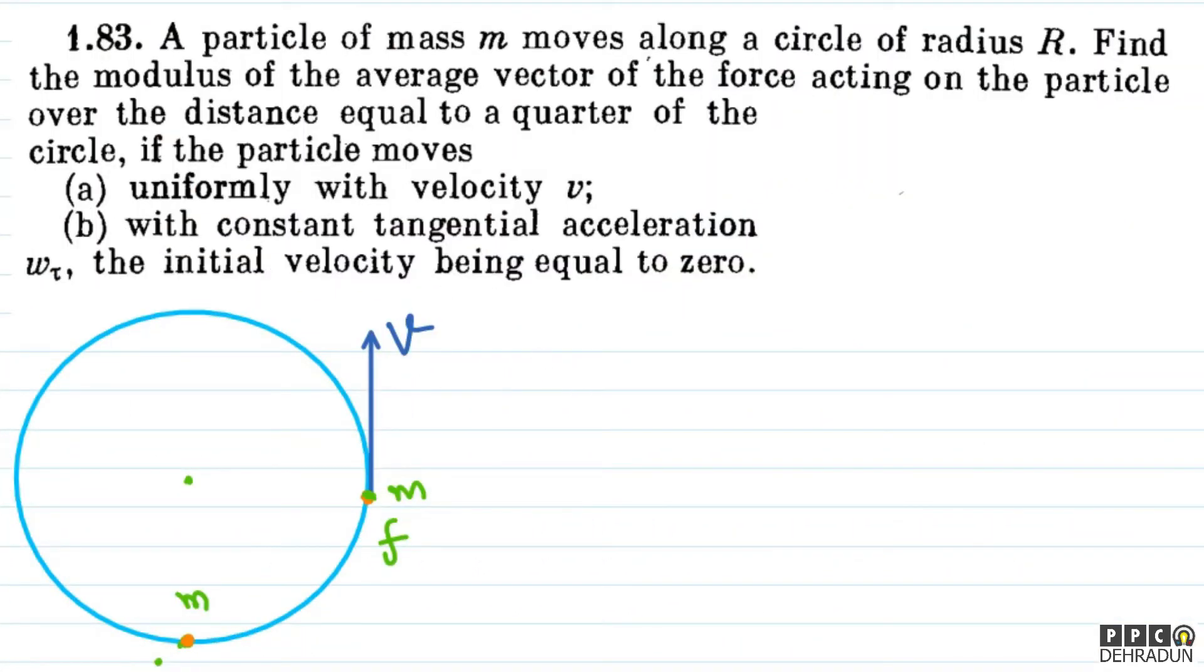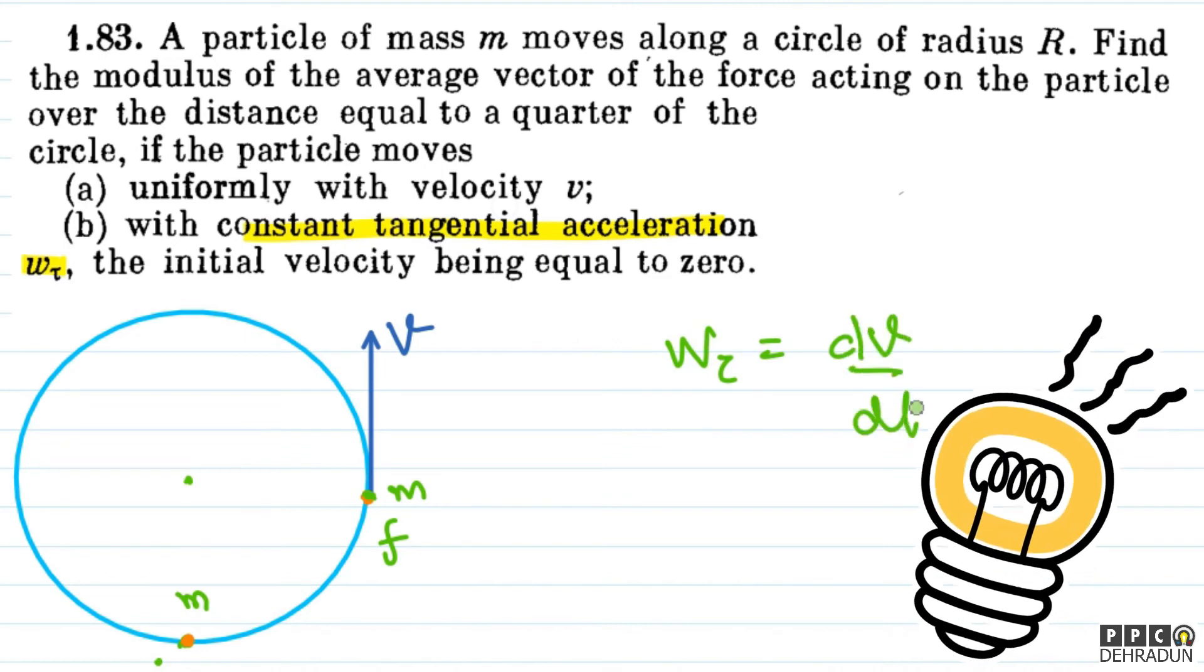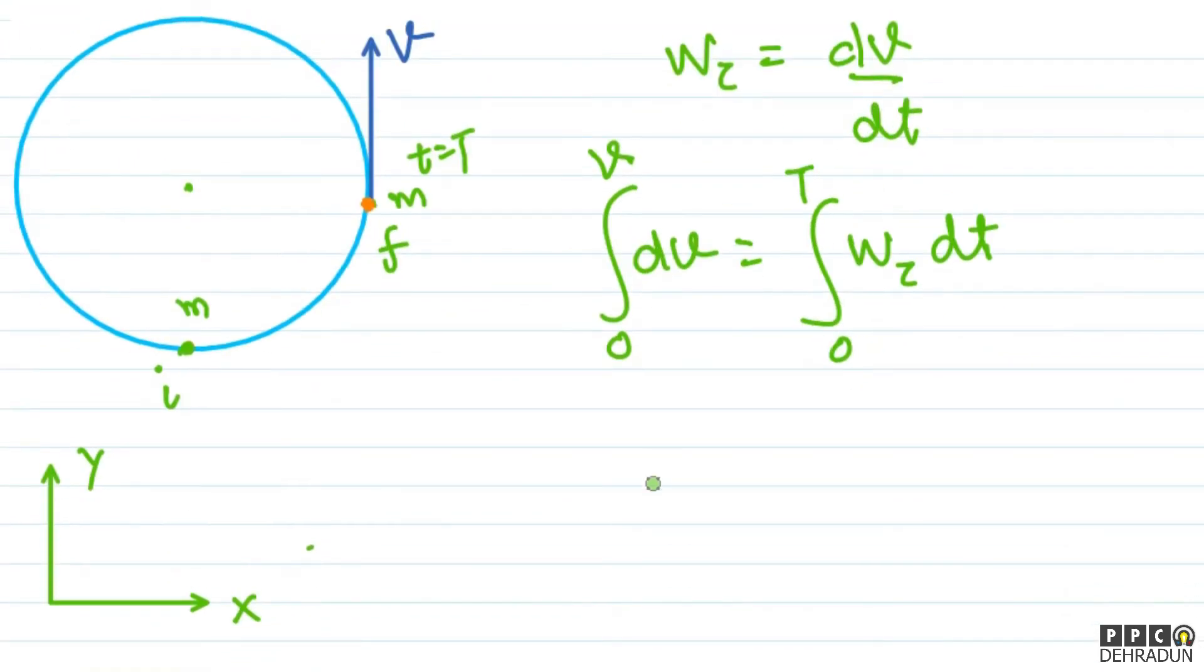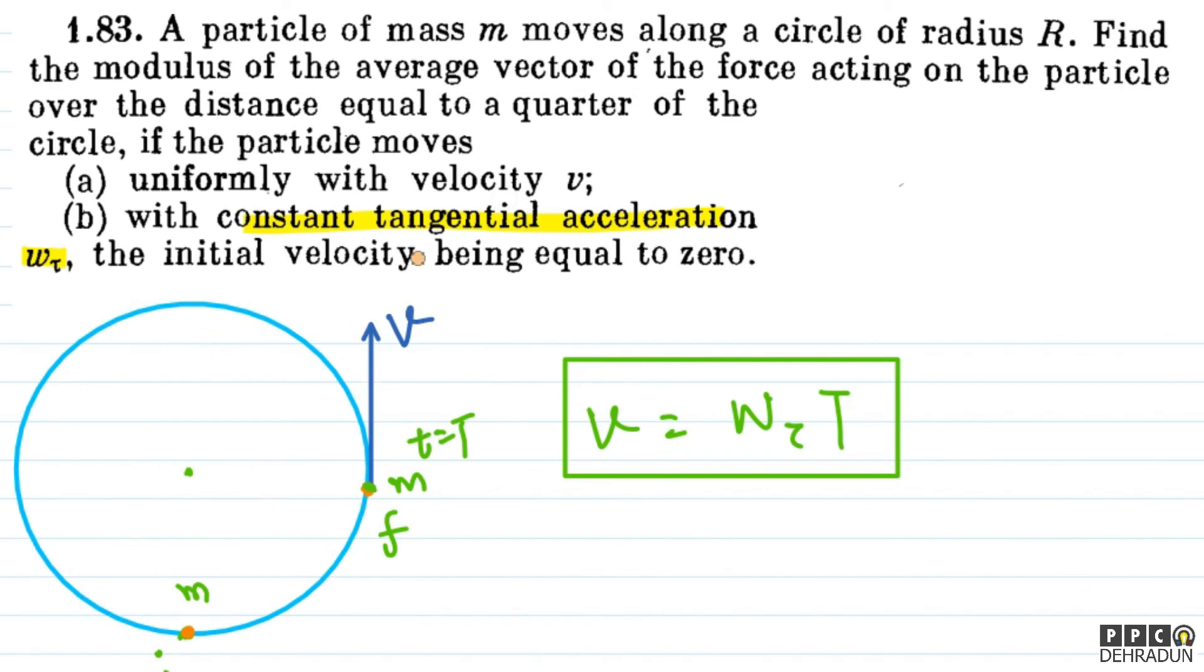Now we will see the second part of the question, which is constant tangential acceleration w_tau. We can use that tangential acceleration w_tau is the rate of change of speed, so dv by dt. Here dv equals w_tau dt. Integrating from t equals 0 where speed is 0, to t equals capital T where speed is v, we get v equals w_tau into T. After moving one quarter of a circle, the speed is equal to w_tau into T.